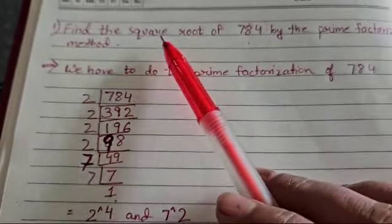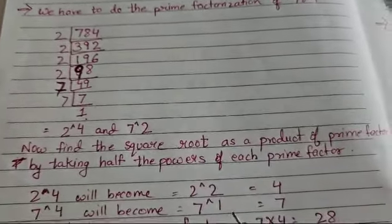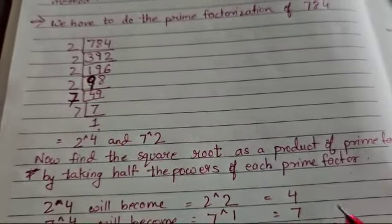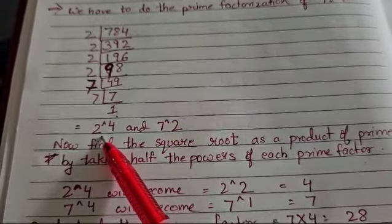Now the question is asking you have to find the square root of 784. To find the square root of the product, what you have to do is take half of the powers.